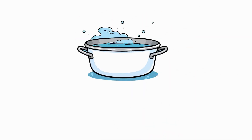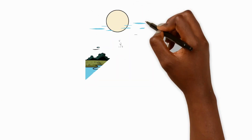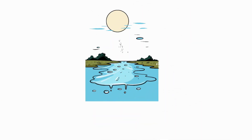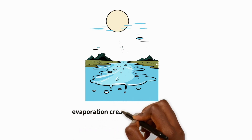When water is heated to 100 degrees Celsius it turns into a gas called steam. This change from liquid water to steam is called boiling. Boiling is a type of evaporation. Evaporation can also happen when water slowly turns into water vapour at quite low temperatures.